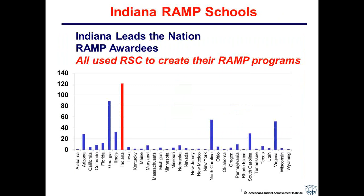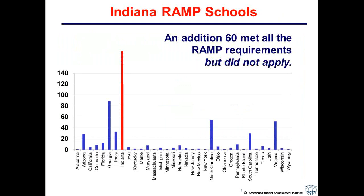In addition to the 120 schools that actually have the RAMP award, there are another 60 schools that used RSC to create a RAMP program but chose not to apply for the award. All in all, there are about 180 RAMP-eligible schools in Indiana, representing about one in every ten schools. Even schools that are not RAMP schools are now talking about data-driven school counseling programs.